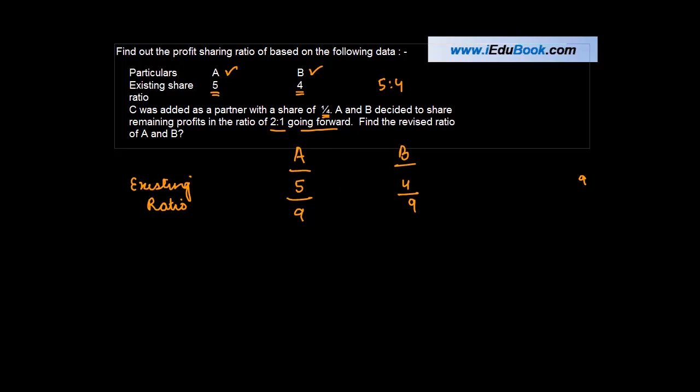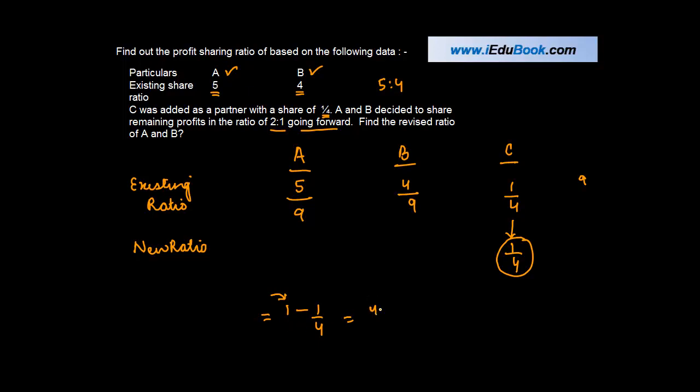Now we got another person into the partnership which is C who got 1/4 of the profits. Let me just put it one line below because this is going to be the new ratio. Now once C has received 1/4, what is it that A and B are left with? A and B are left with 1 minus 1 upon 4, 1 being 100%, or 4 minus 1 upon 4, which is 3 upon 4.